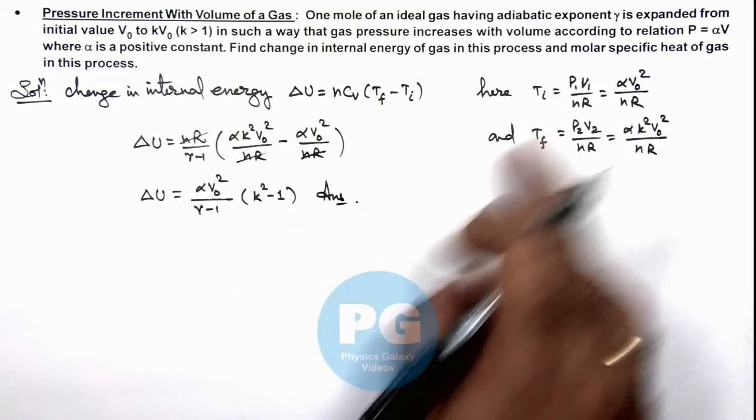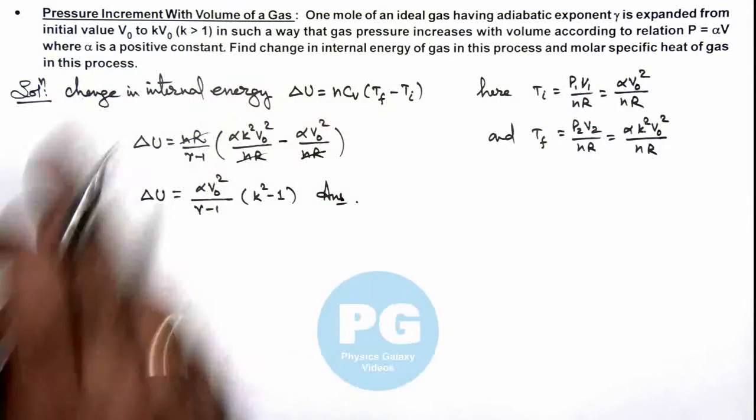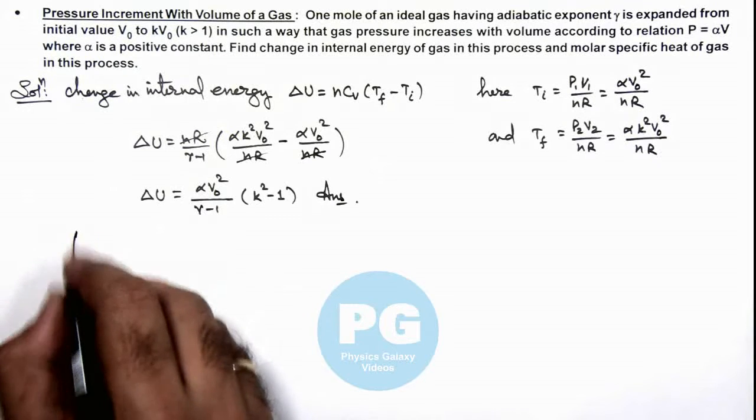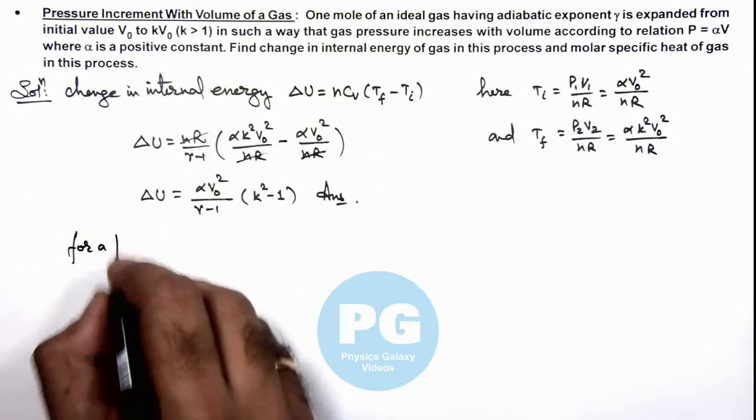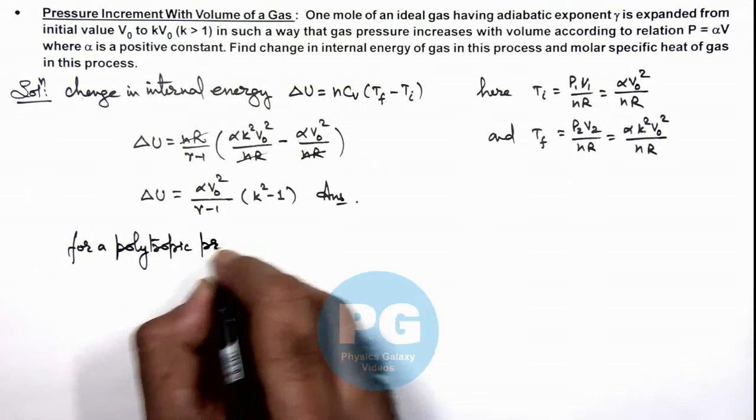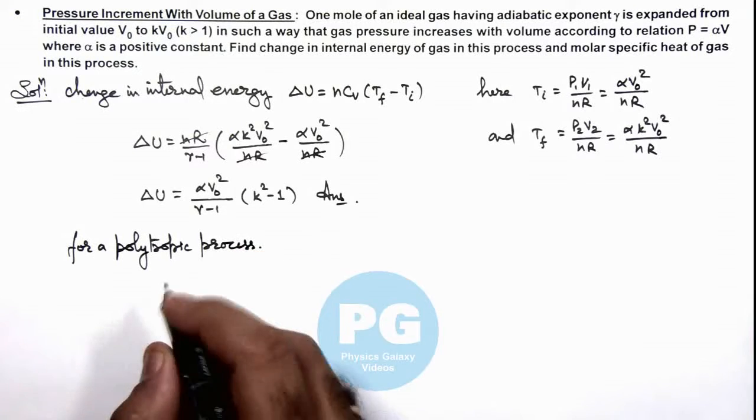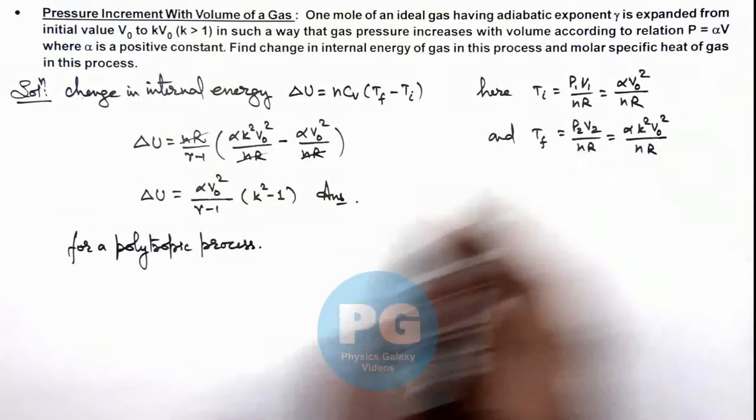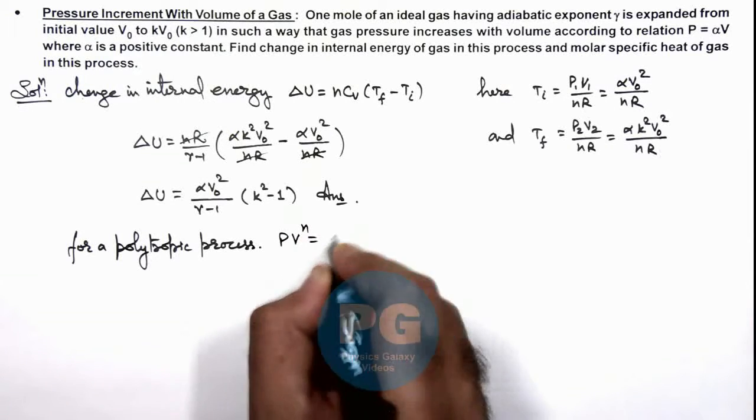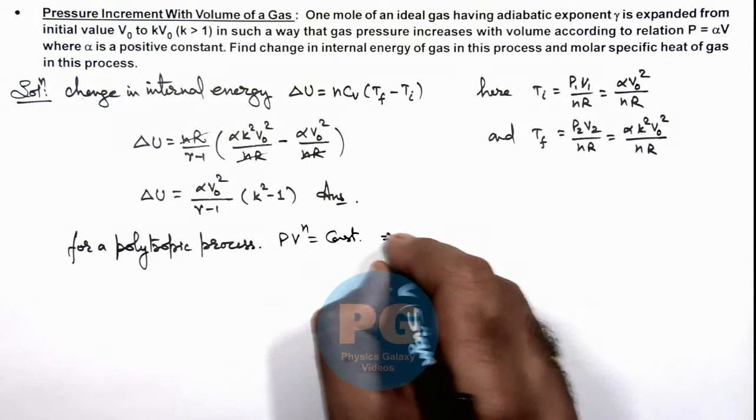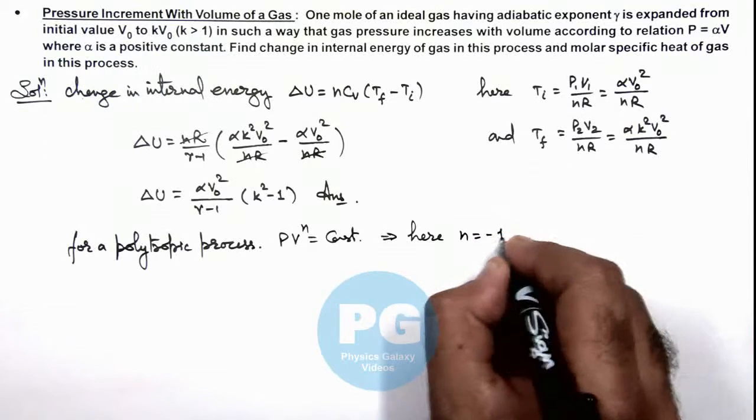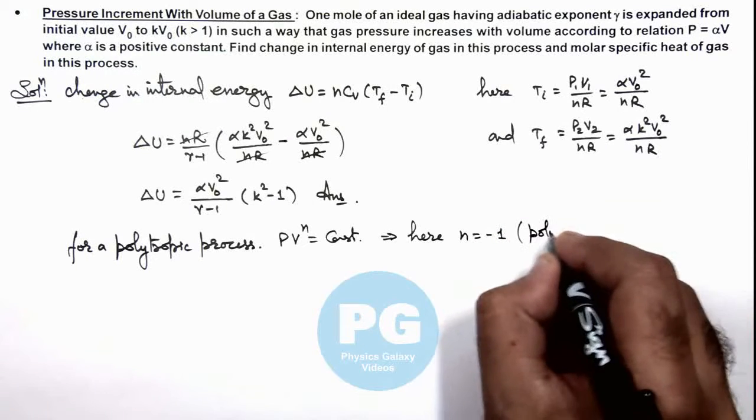We are also required to find the molar specific heat of gas in this process. Here we can write for a polytropic process, because we are given as P = αV, so for a polytropic process we write Pⁿ = a constant. This implies here we are given with the value of n is equal to -1, which is the polytropic constant.